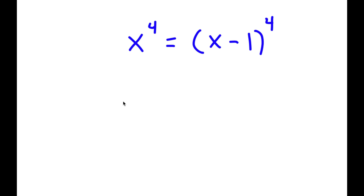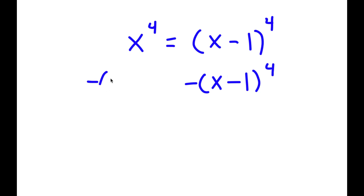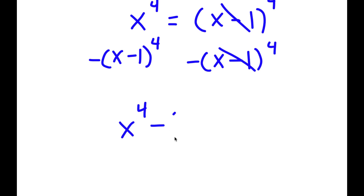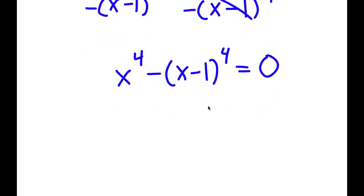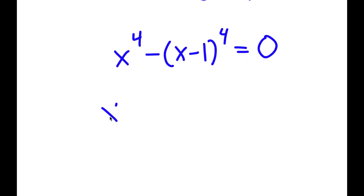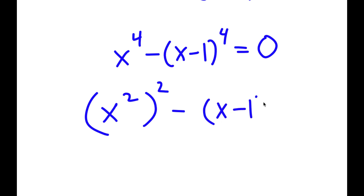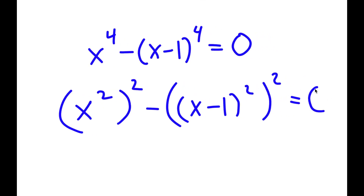In this problem I have x to the power of 4 is equal to x minus 1 to the power of 4. To solve this, I'll subtract x minus 1 to the power of 4 from both sides, giving x to the power of 4 minus x minus 1 to the power of 4 is equal to 0. Now, x to the power of 4 is the same as x squared, to the power of 2, and x minus 1 to the power of 4 is x minus 1 squared, to the power of 2.